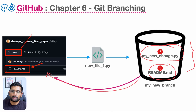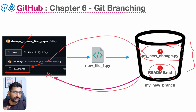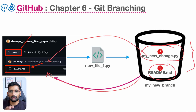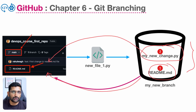After you have verified, tested, and done all the checks, you merge your changes into the main branch. This is how the whole branching works. It looks complicated right now but once we do the actual demo it will look very simple.